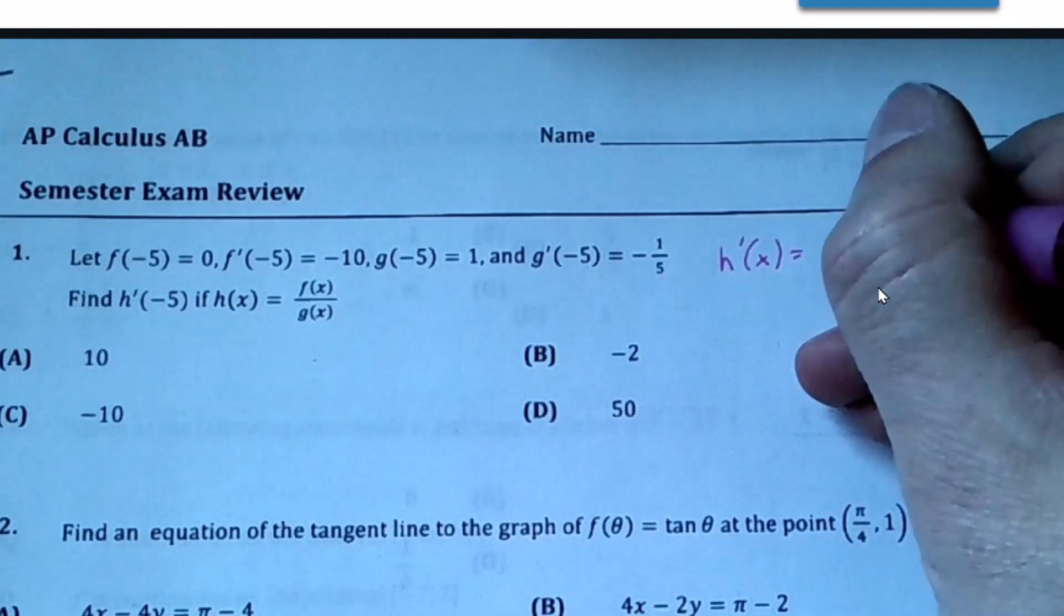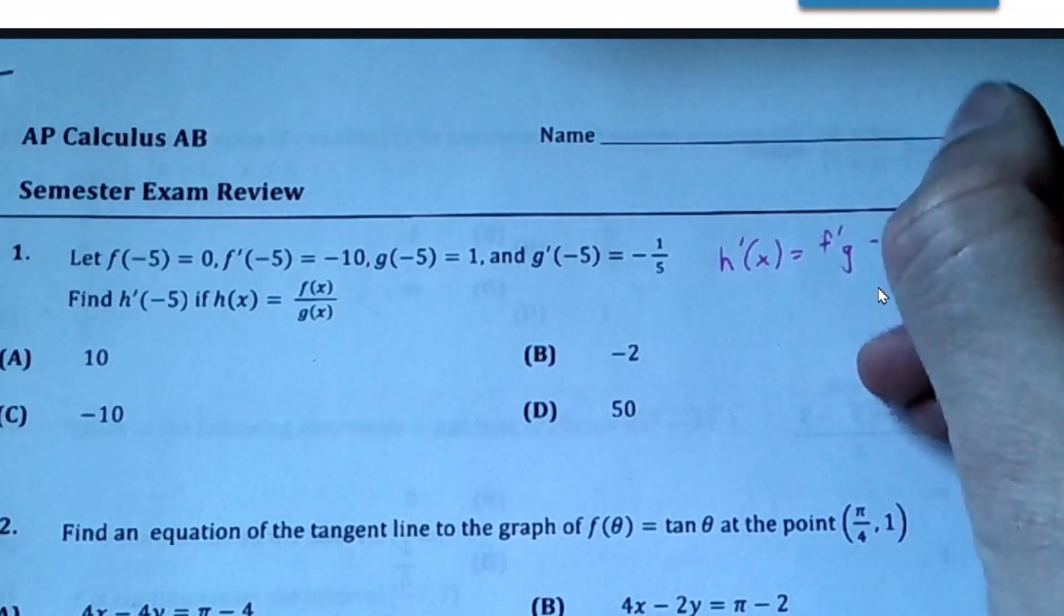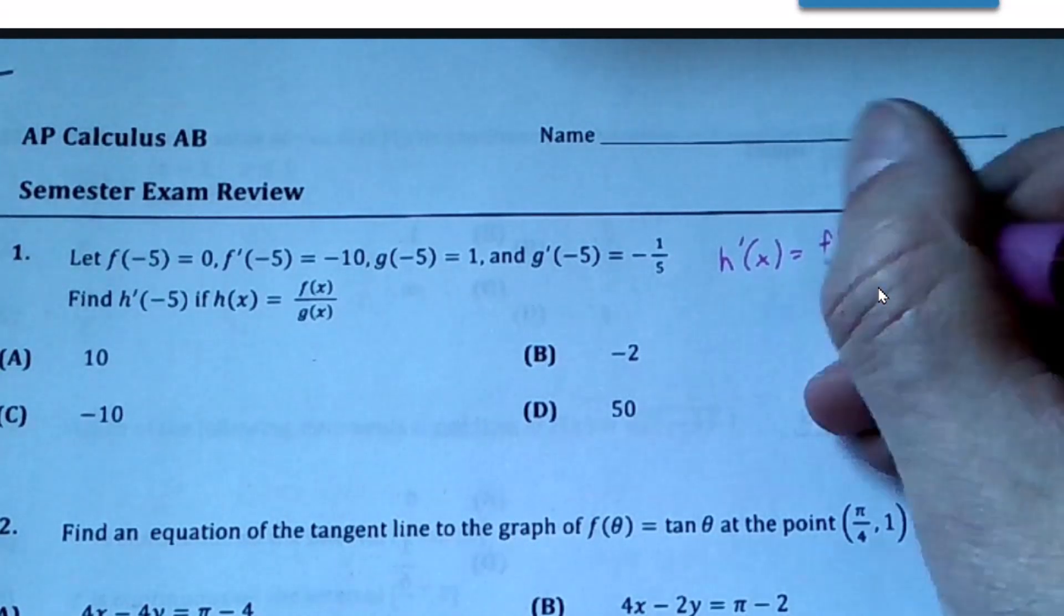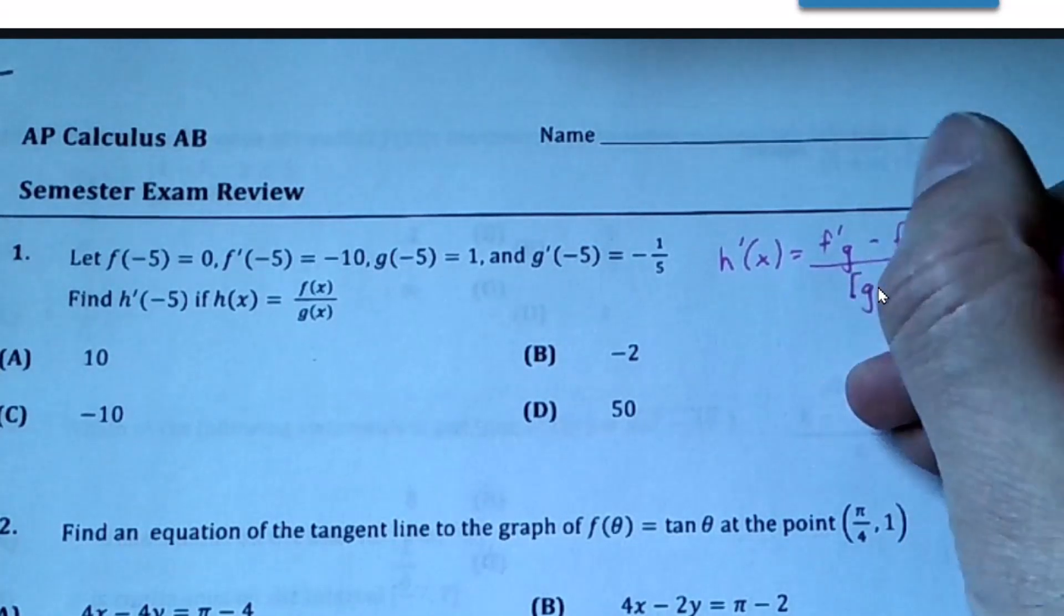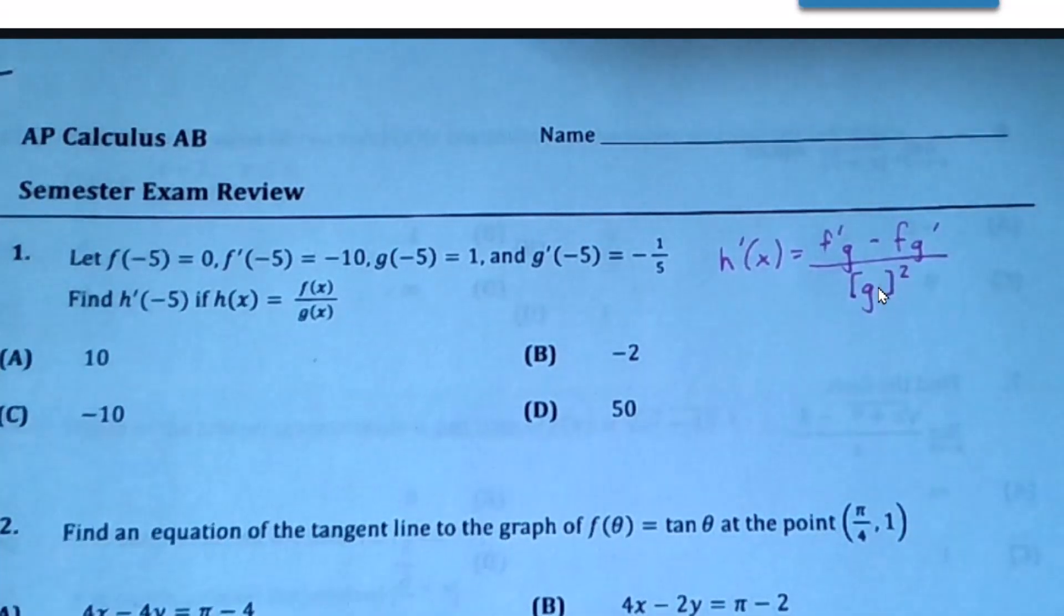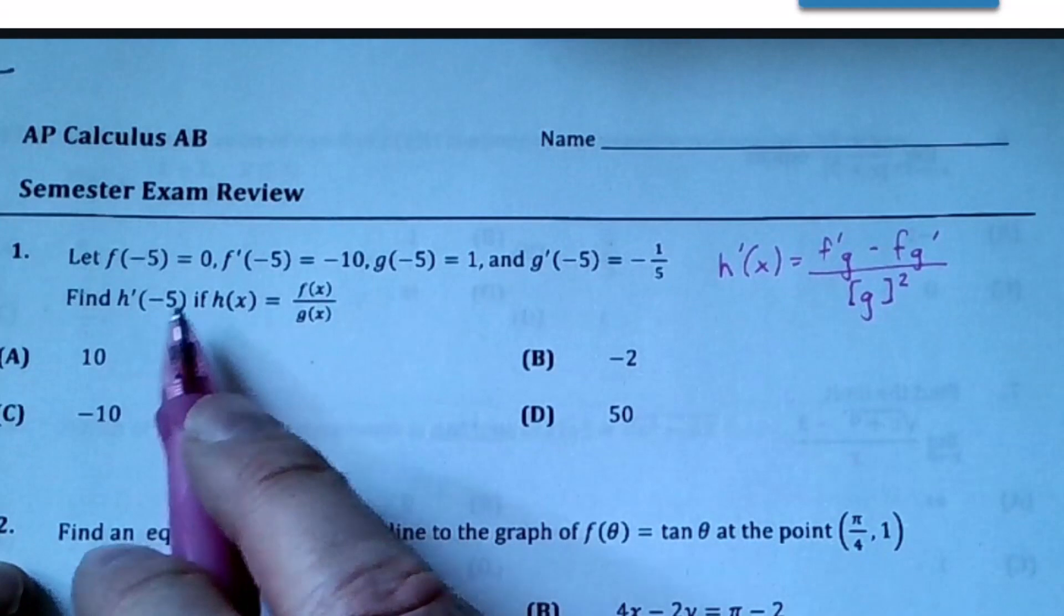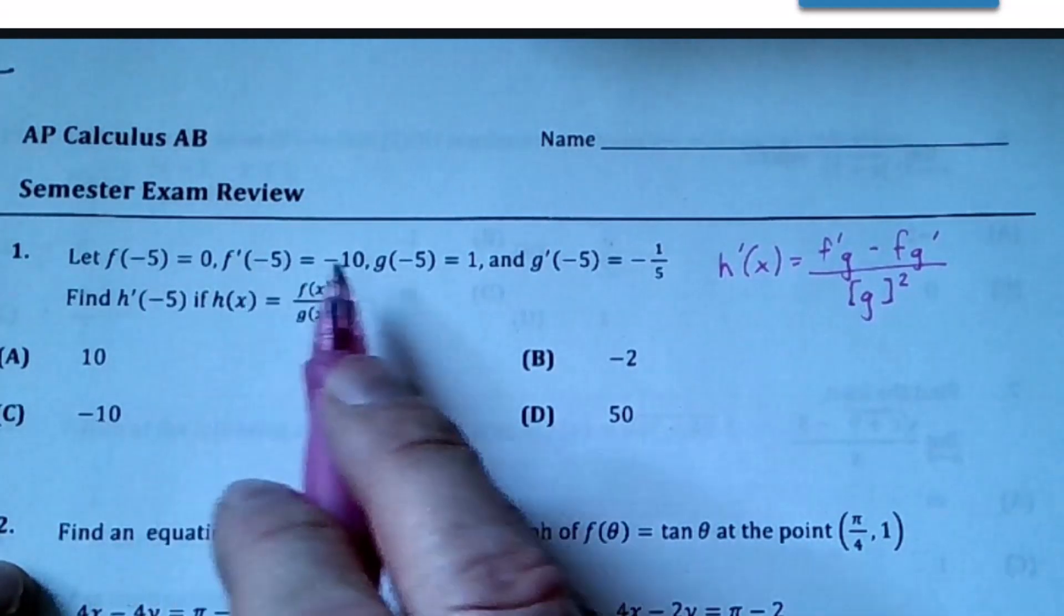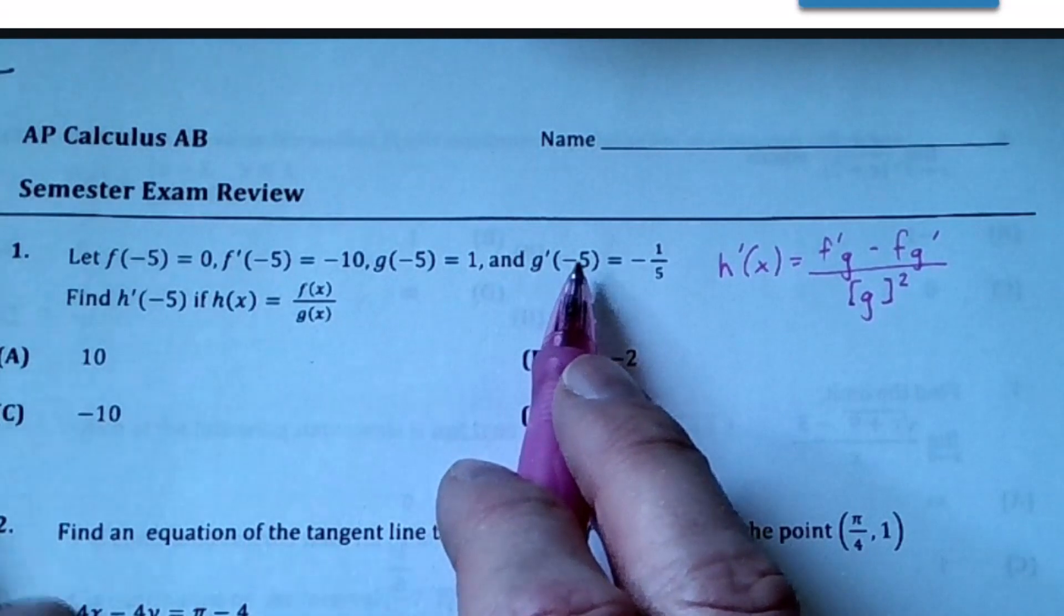Taking the derivative of the first but not the second means we need the product rule. So what we're going to do here is evaluate at negative 5. Notice that in every instance negative 5 is plugged in - that is absolutely necessary or we would not have enough information.